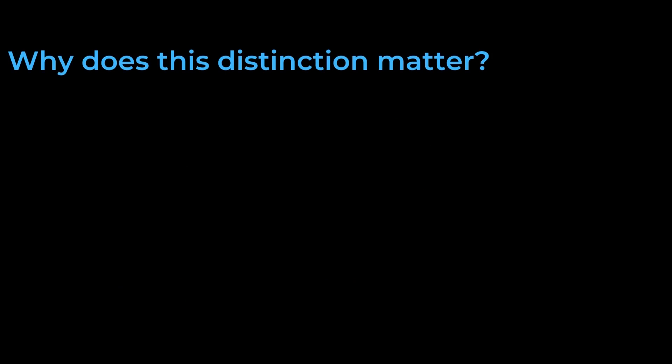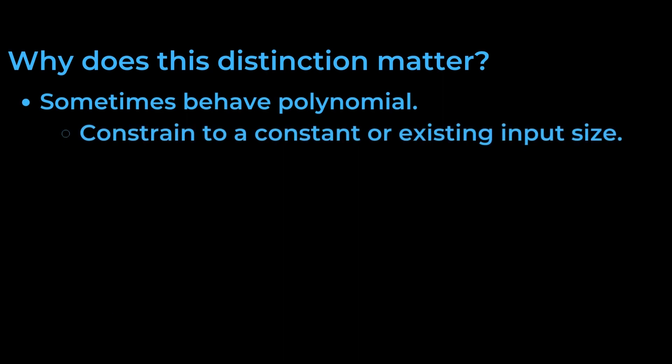So why does this distinction matter? Why don't we just call them exponential time algorithms? The reason is that sometimes these algorithms behave like polynomial time algorithms. If the input number can be constrained to a constant, or tied to the size of another input, then the runtime becomes polynomial time again.